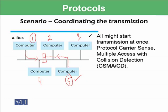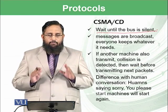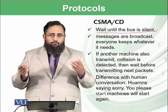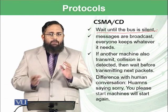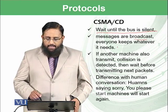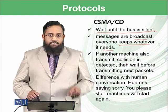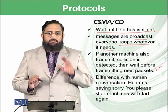One protocol is known as CSMA/CD — Carrier Sense Multiple Access with Collision Detection. It detects the collision and then tries to make sure that kind of collision doesn't happen next time. It has certain rules and steps. One step is to wait until the bus is silent. If a computer wants to send a message, it should wait; if the bus is silent, then start sending. Messages are broadcast and everyone keeps whatever it needs. If another machine also transmits, collision is detected.